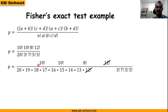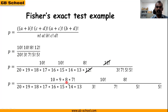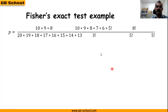Next is 10!; we expand it down to 7!: 10 × 9 × 8 × 7!. The 7! can be cancelled with the 7! in the denominator. Then the other 10! is expanded down to 5!: 10 × 9 × 8 × 7 × 6 × 5!, and that 5! cancels with one of the 5! terms in the denominator.